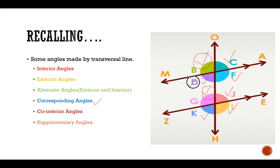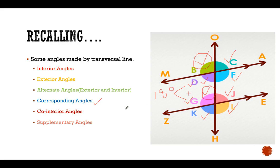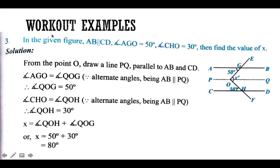Then we come to co-interior angles: d and g. Remember, when you add d and g you get 180 degrees. For supplementary angles, k plus l or j plus l equals 180 degrees. Remember that.